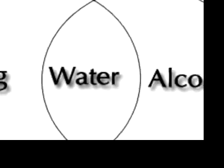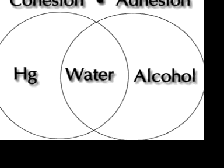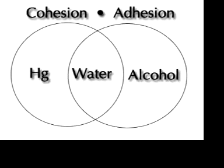Mercury's strong cohesion is responsible for the convex meniscus it forms in a graduated cylinder.